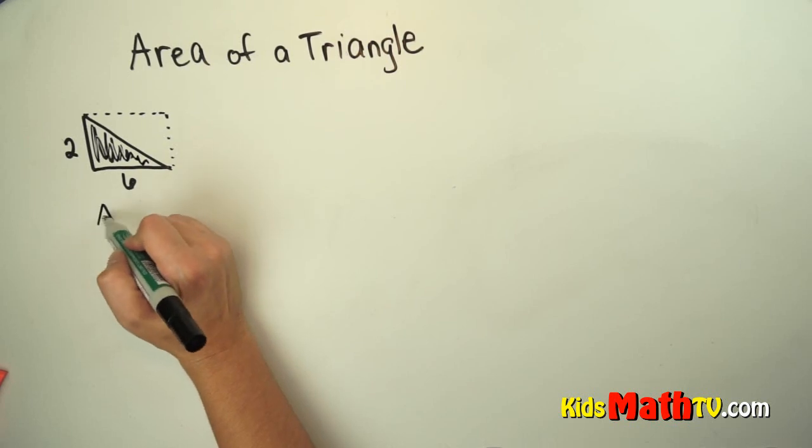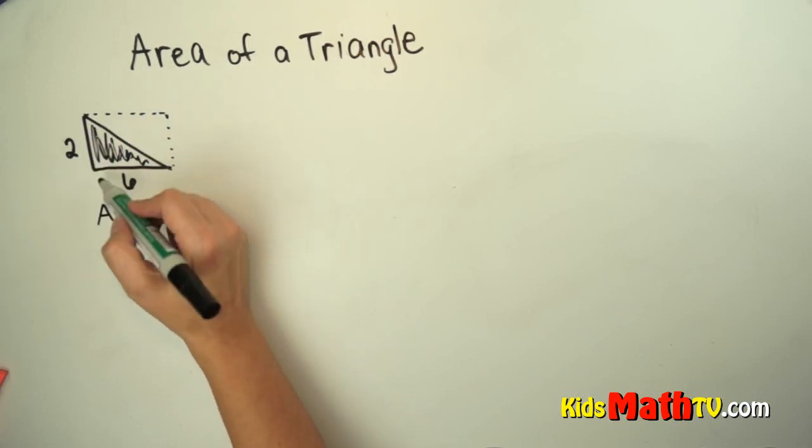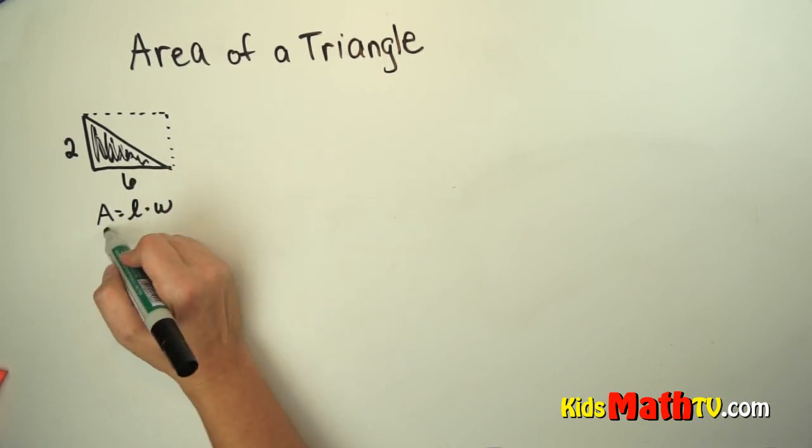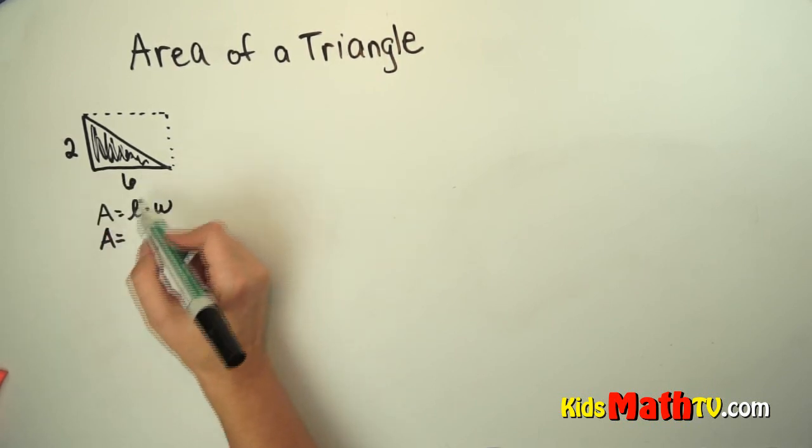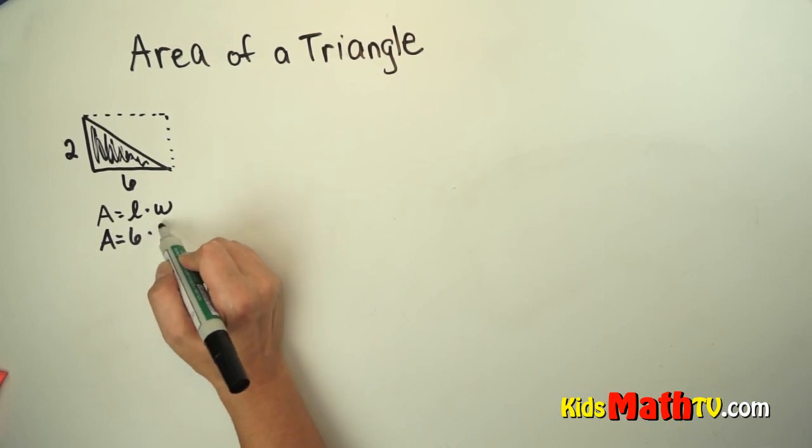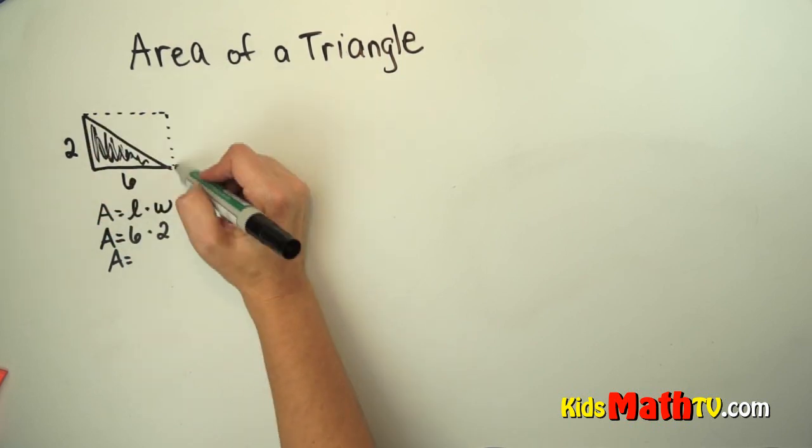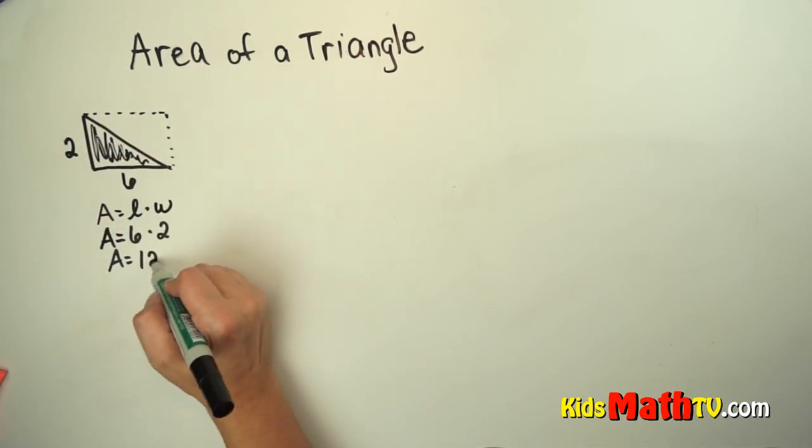So to find the area of the rectangle, we take the length times the width. So the area in this case would be 6 as the length times 2 the width. The area of the entire rectangle is 12 units.